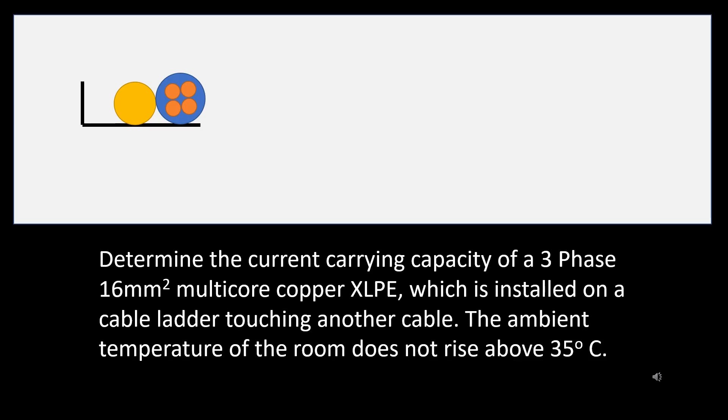So, looking at the current carrying capacity of our cable, which was 88 amps, times the derating factor of 0.87 equals 76.56 amps. Now, remember that our cable is also in a situation where the temperature never went over 35 degrees.